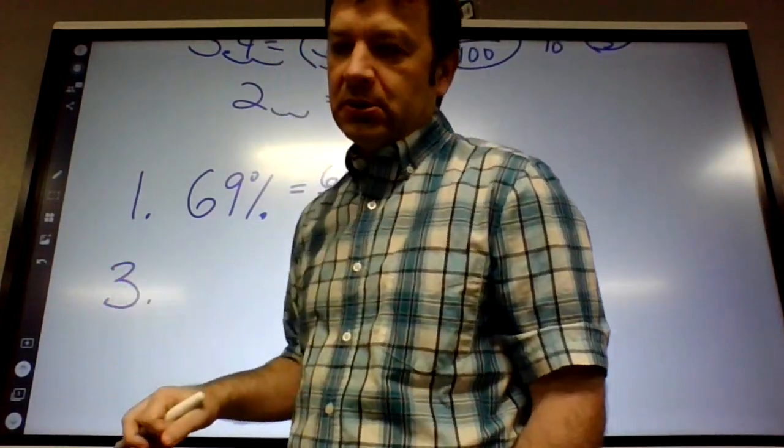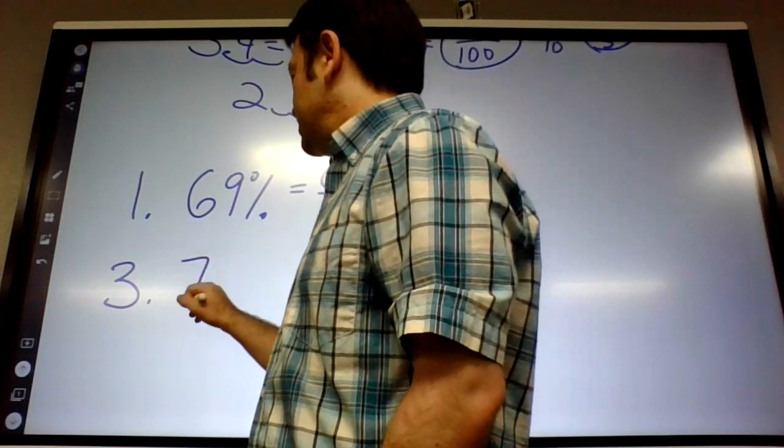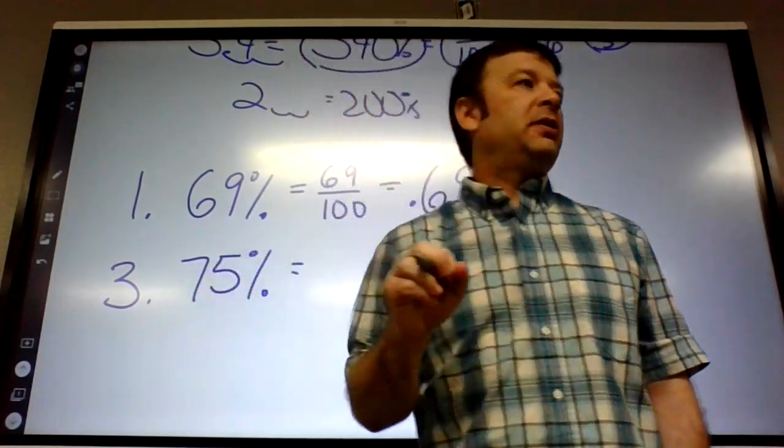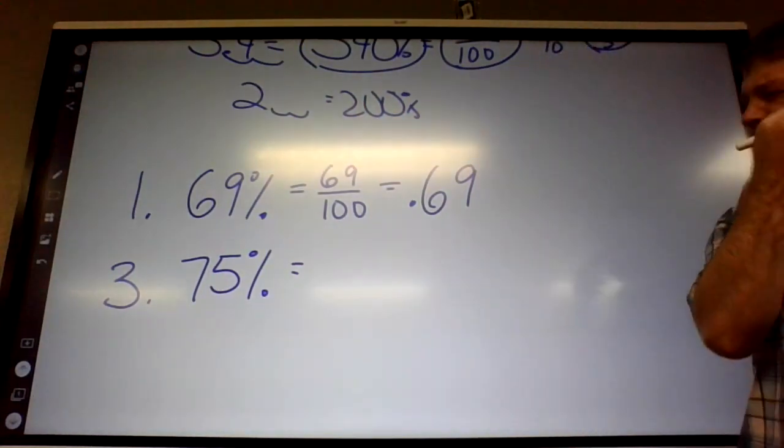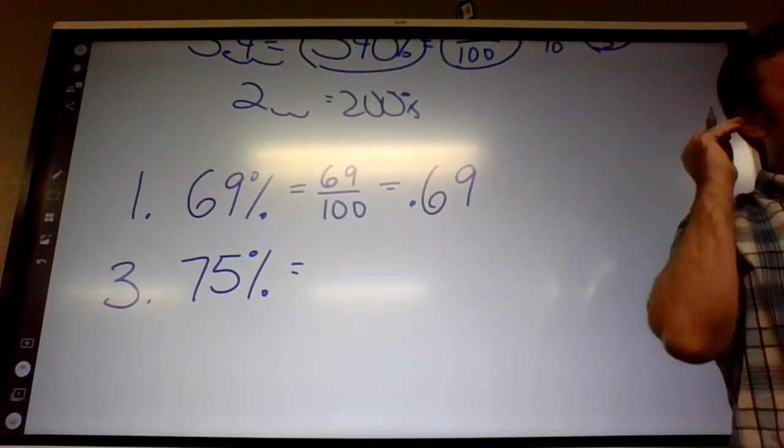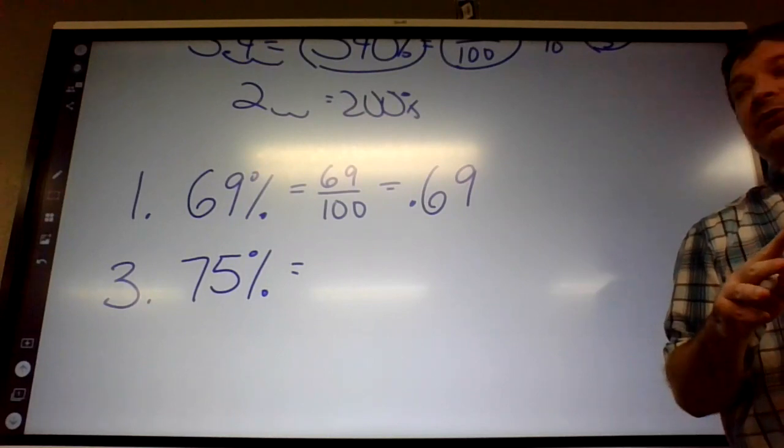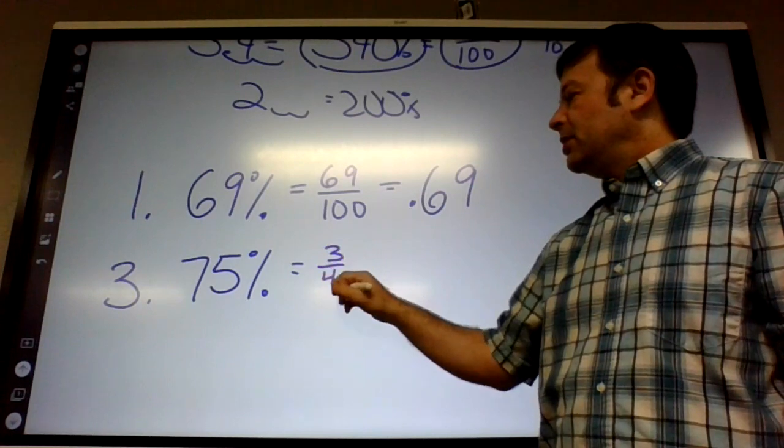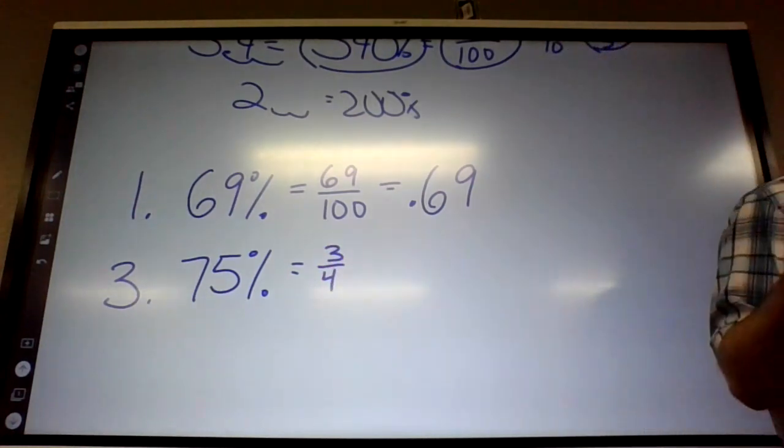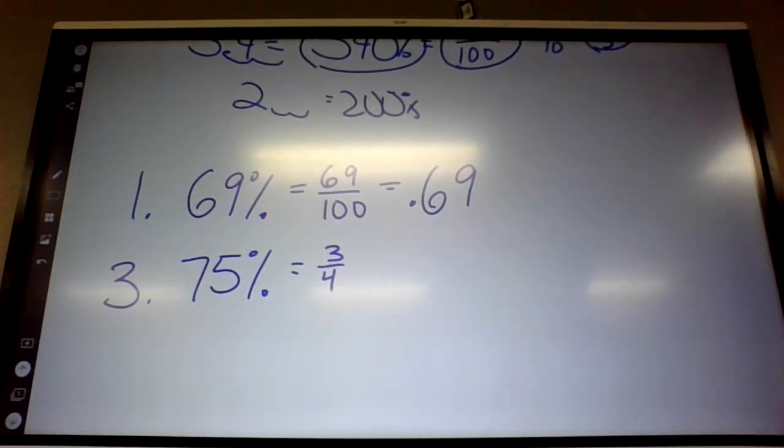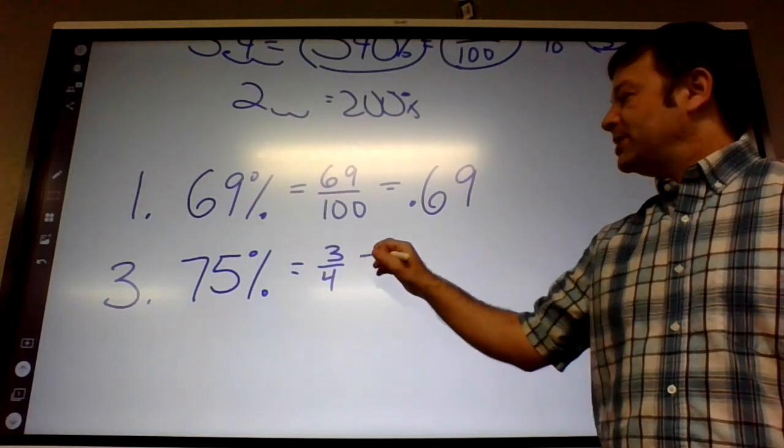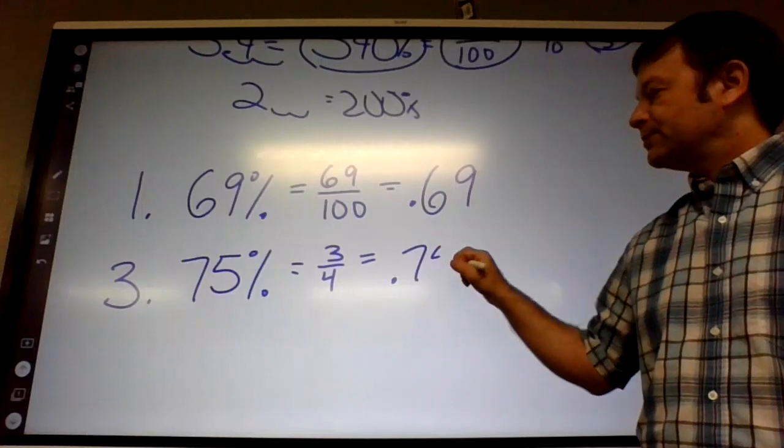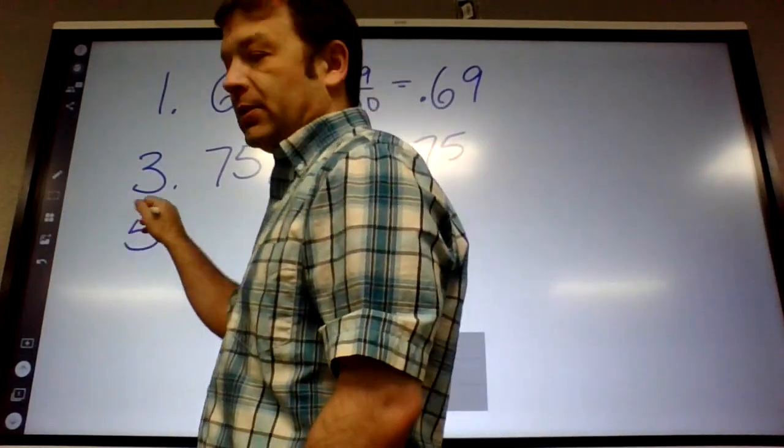Number 3. 75%. You guys should know this one by heart, it's kind of a common one. What's 75% as a fraction? 75 over 100, which reduces to 3 over 4. Right, because like 75 cents is like 3 fourths of a dollar, right? 3 out of 4. And what's it as a decimal? 0.75.